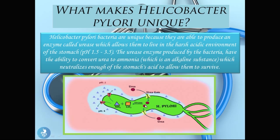Urease is an enzyme which, when in contact with urea — the urea enters the bacteria — catalyzes a reaction that produces ammonia. Because ammonia is a very alkaline substance, it creates a wall of alkaline around the bacteria, which prevents the acidic environment from harming and killing them. This is a very clever mechanism, and because of it, H. pylori are able to survive in the stomach's harsh environment and multiply, causing even greater damage.